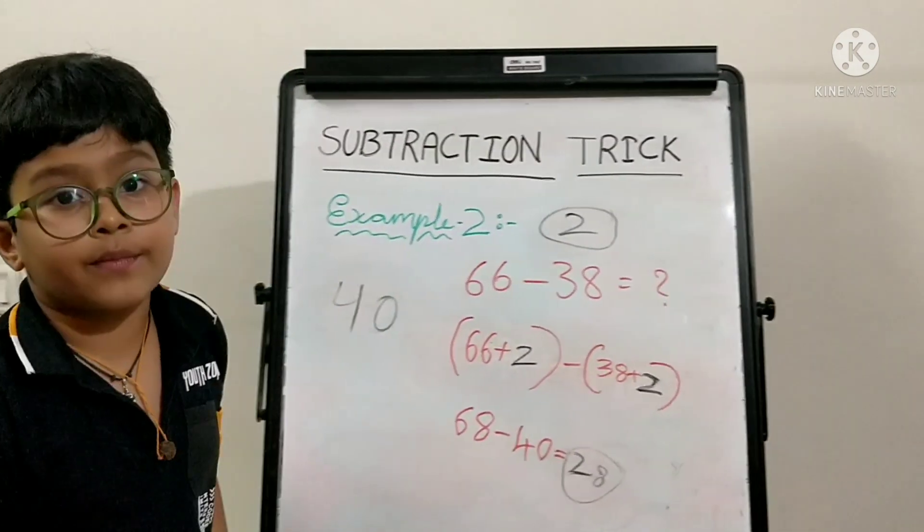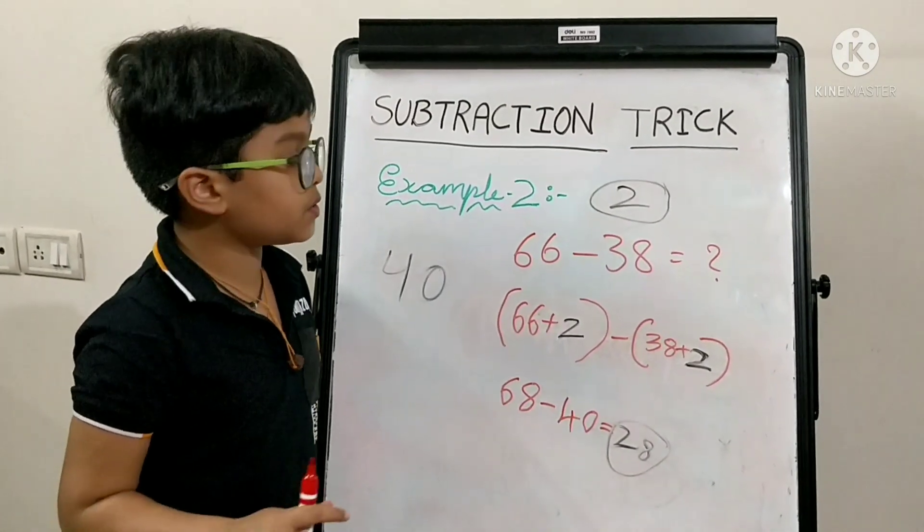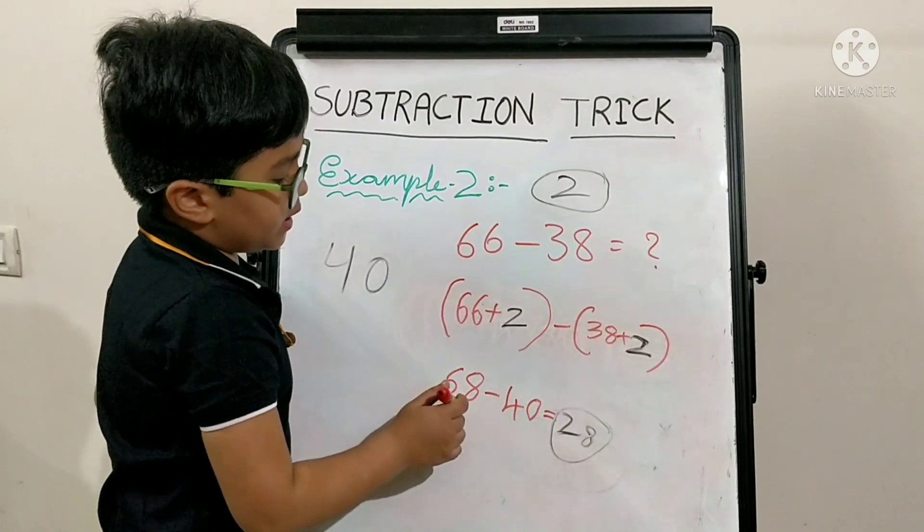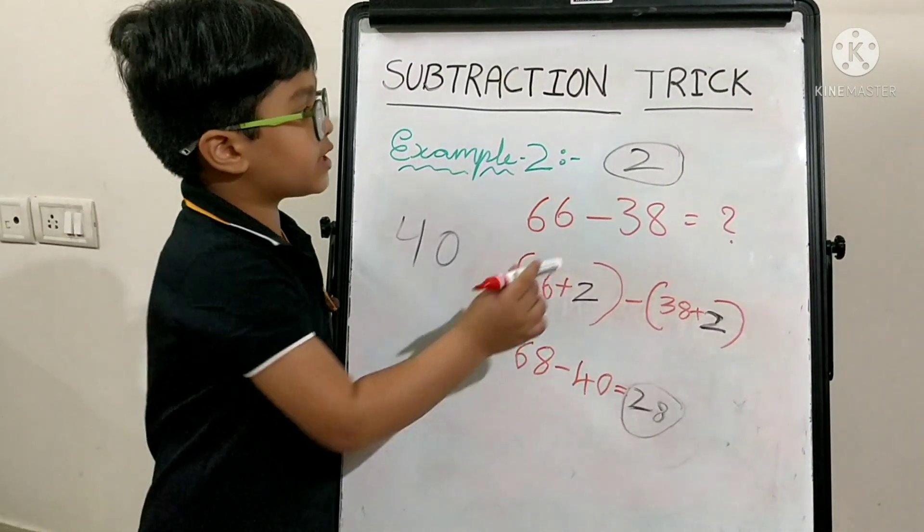I am repeating again. You don't need to get confused. 66 minus 38, 68 minus 40, both are equal. We are just adding 2.